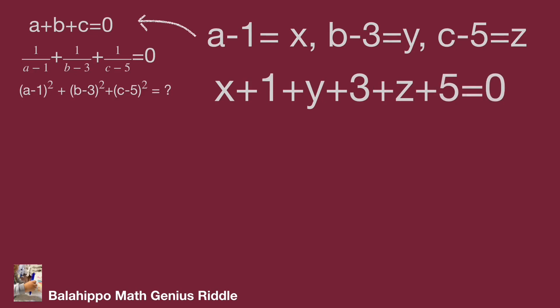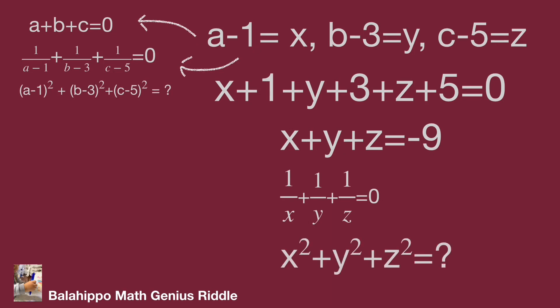We have new equation: x plus y plus z equal to minus nine. Substitute these values into the second equation. It becomes one over x plus one over y plus one over z equal to zero. The problem becomes find the value of x squared plus y squared plus z squared.